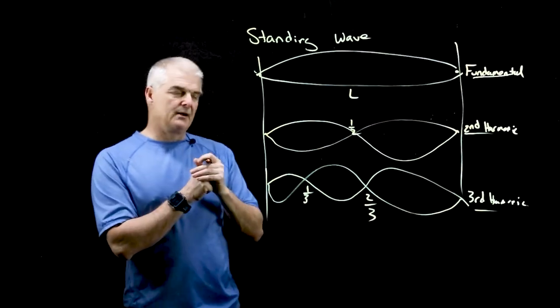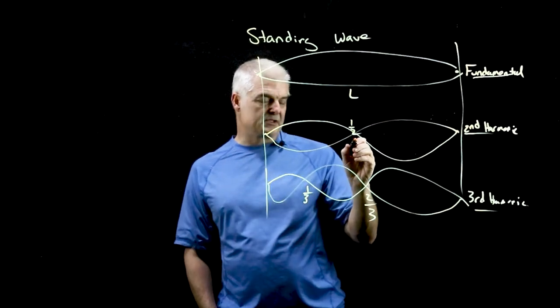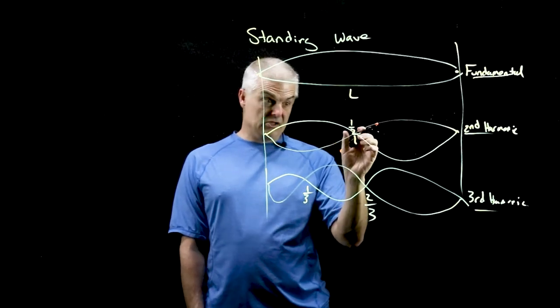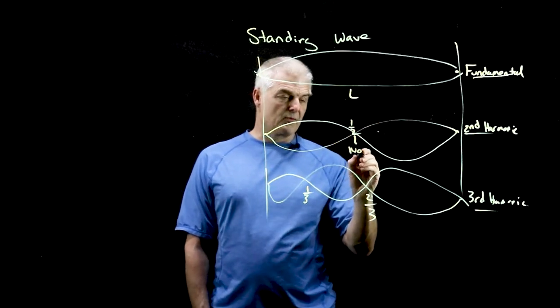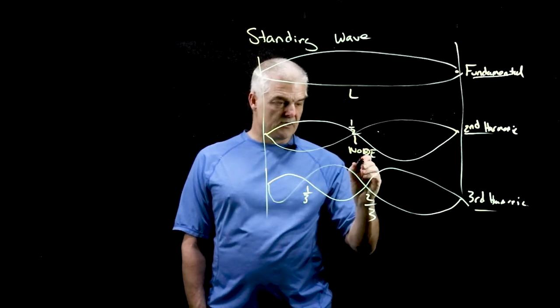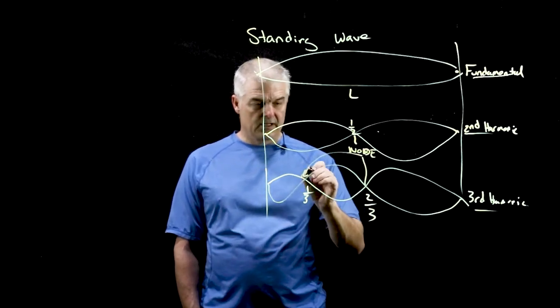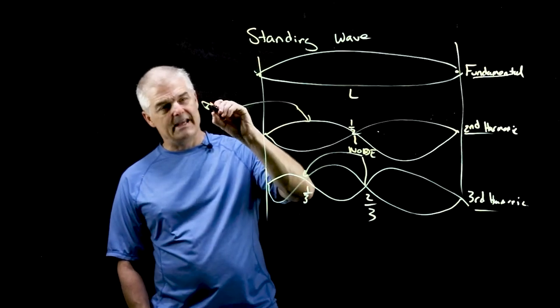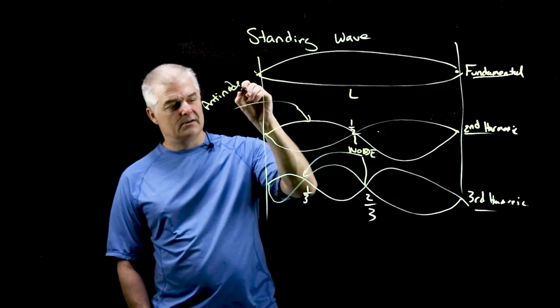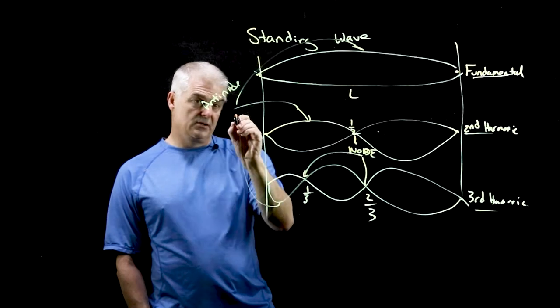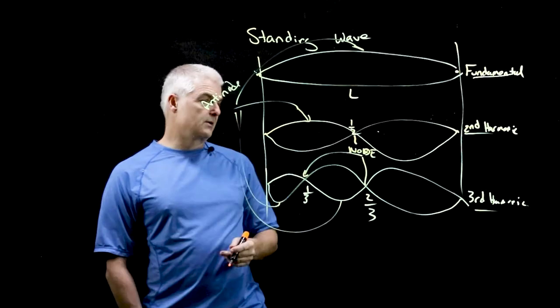Before we talk some more about how musical instruments work, I think it's important to note some definitions. When you are at these places where you have destructive interference, the wave is not moving at all. It's called a node. And then the point of maximum height, this is called an anti-node.